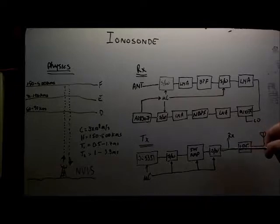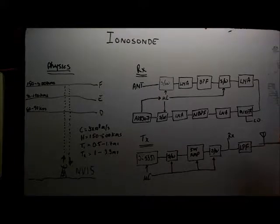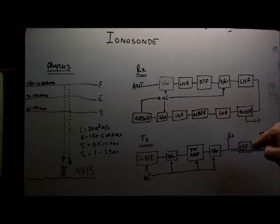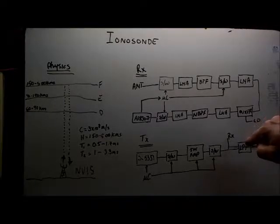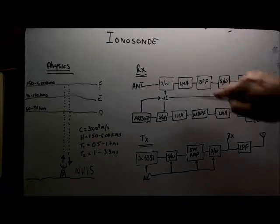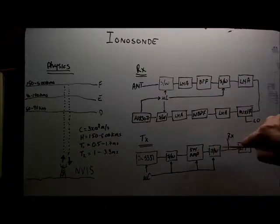Then there'll be another switch which the microcontroller will turn on and off. That feeds into a low pass filter and finally to the antenna. The receiver will be connected to this point here, so there'll be a switch here which will attenuate any of the signals coming out.